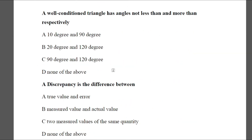Question 9: A well-conditioned triangle has angles not less than and not more than — respectively. Option A: 10° and 90°, Option B: 20° and 120°, Option C: 90° and 120°, Option D: none of the above. The answer is C — 90° and 120°.